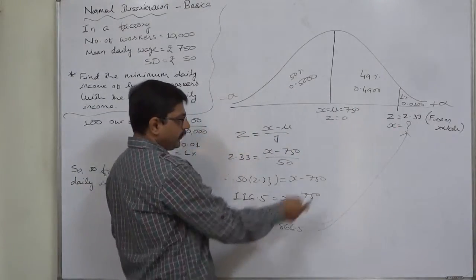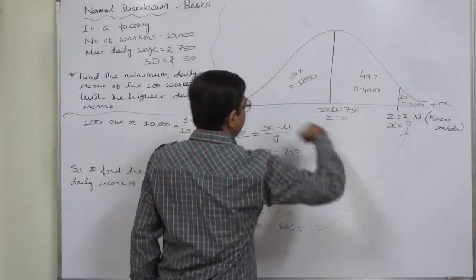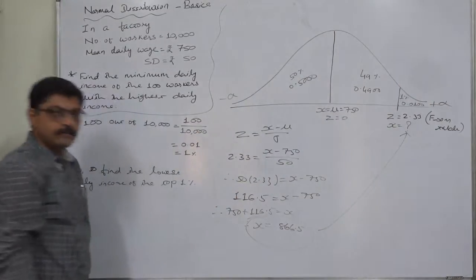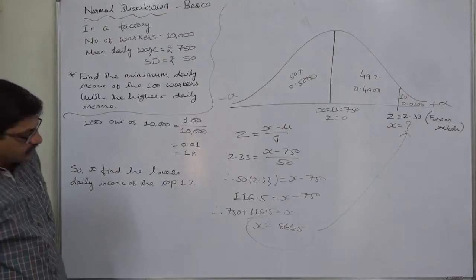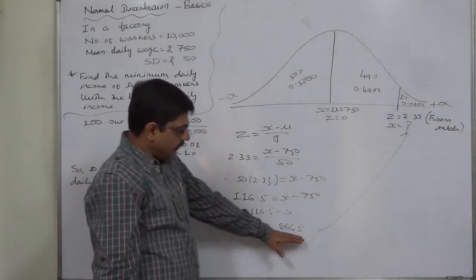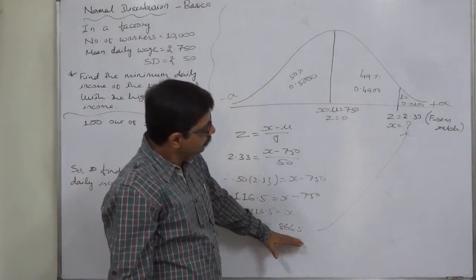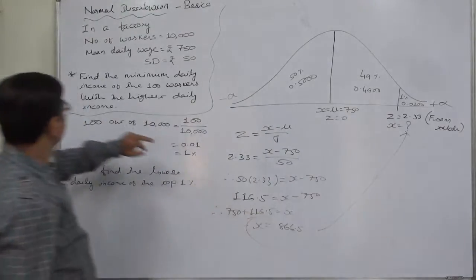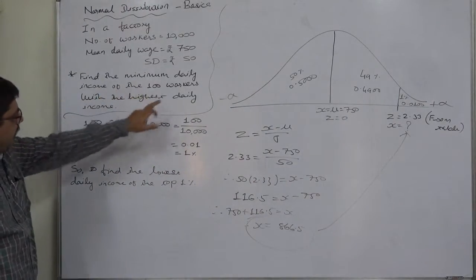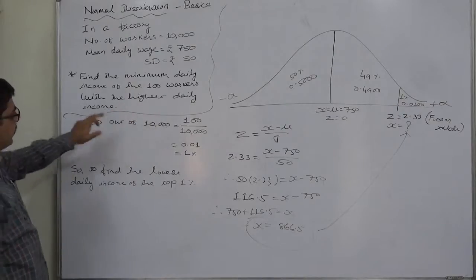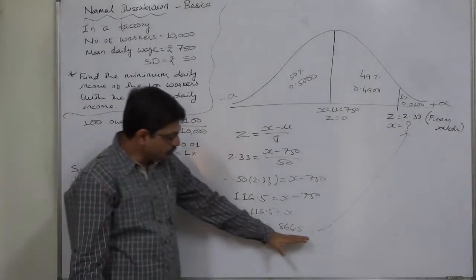The remaining 99% workers have daily income of 866.5 or less. So we can say that the minimum daily income of the 100 workers with the highest daily income is Rs. 866.5.